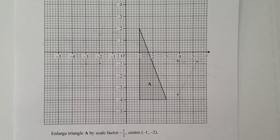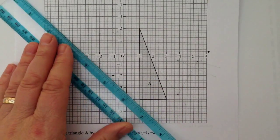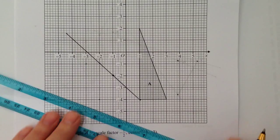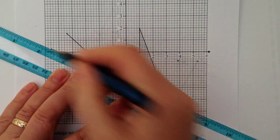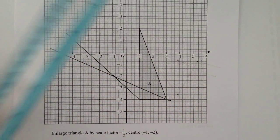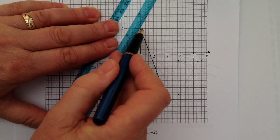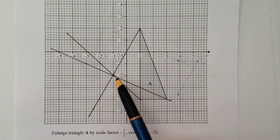It's a little bit confusing on this particular graph because the grid lines themselves are quite strong, so I hope you can see this okay. But minus 1, minus 2 is this point here. I'm going to draw my lines of enlargement through this particular point — from each corner of the original shape, making sure that each time it goes through the point minus 1, minus 2. These are my lines of enlargement.